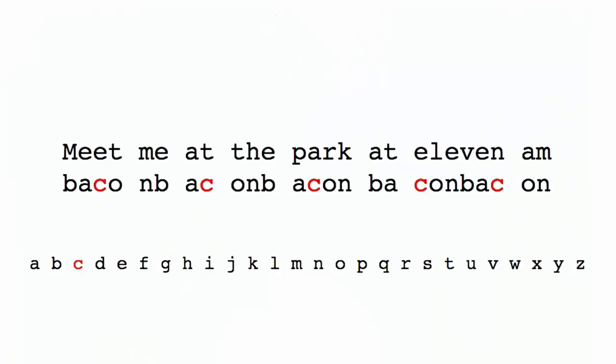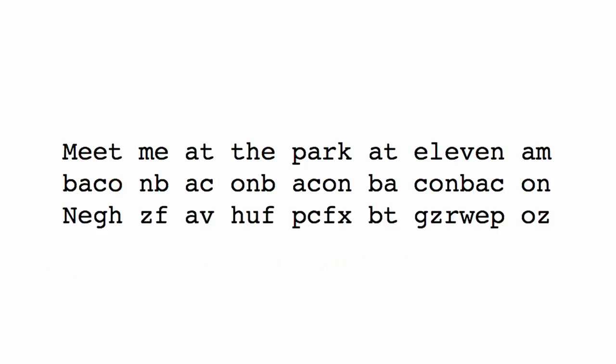M gets shifted by one place to become N. The first E doesn't shift at all, but we shift the second E by two places to G, and T by 14 places to H. If we work through the plaintext, we end up with the ciphertext. Again, not very romantic sounding, but definitely cryptic.